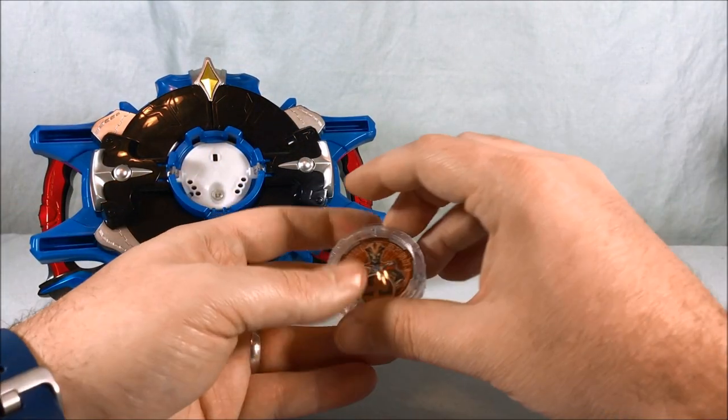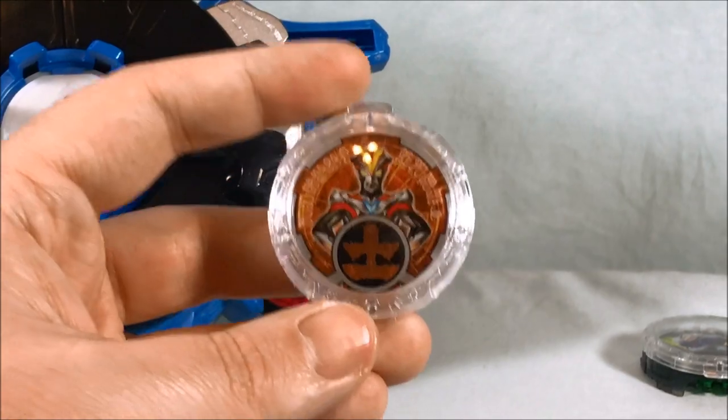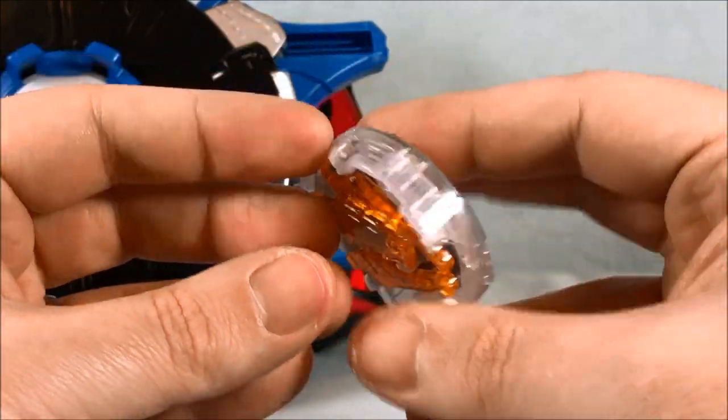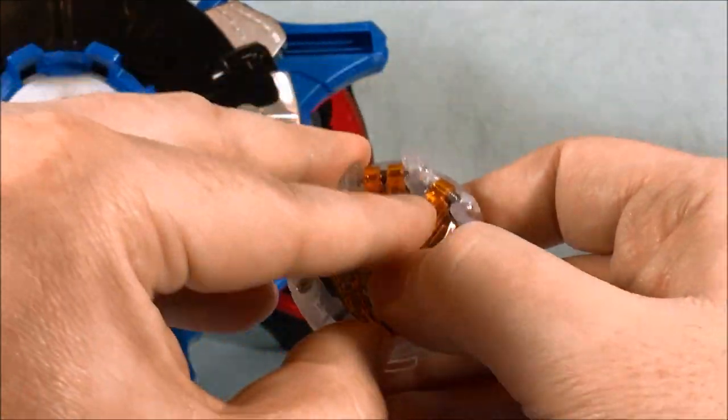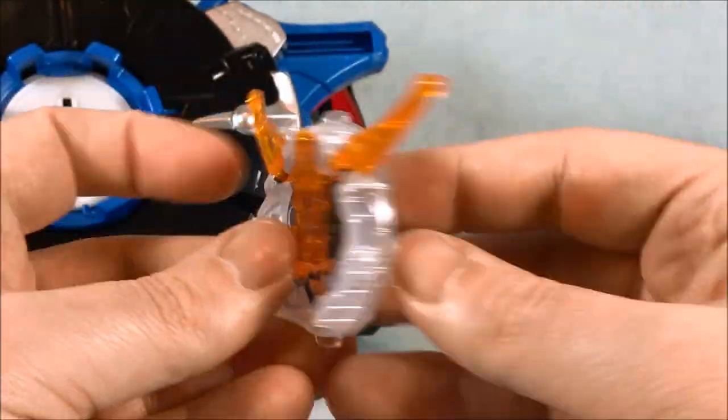All right so we'll take a look at each of these and then pop them in the Rube Gyro. Here is Victory. First off we'll start with the Rosso configuration.